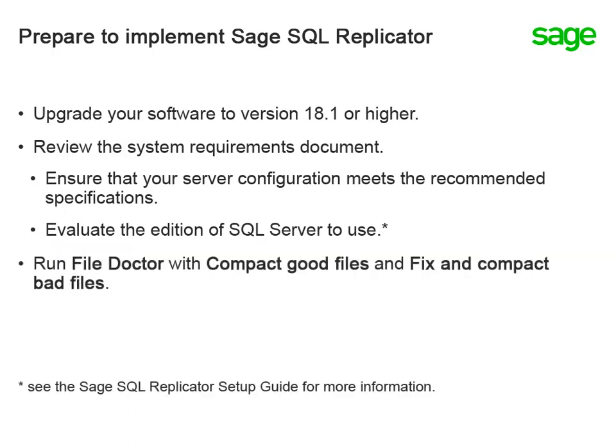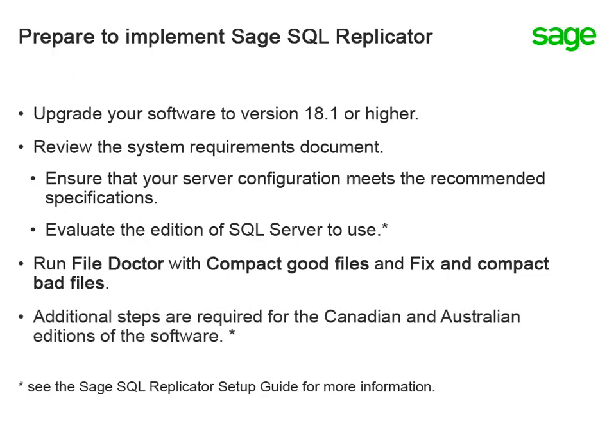Before you replicate your data, it's a good idea to run File Doctor so it can check and fix any corrupt files before the replication process. If you use the Canadian or Australian edition of Sage 300 CRE, there are some additional setup steps for SQL Replicator. Make sure you download the Setup Guide for the instructions.